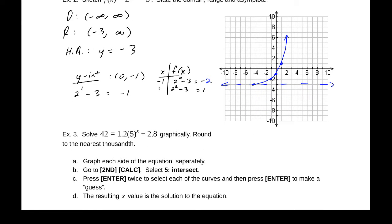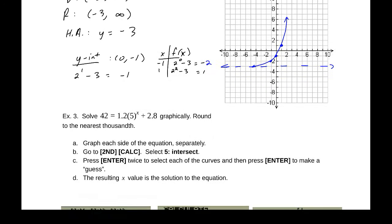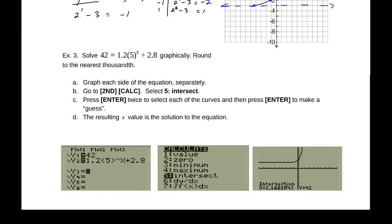Example three, solve this equation graphically and round to the nearest thousandth. So what we'll do for this, 42 = 1.2(5^x) + 2.8. We will graph each side of this equation separately. This will be my y-one in my function, and this will be y-two. Once they're graphed, I will go to second calc, select five for intersection, press enter twice to select the two functions we have on there. Now, if you notice, they're actually not both graphed on here. Y = 42 is somewhere up here, so I can't see it, however it will still find the intersection. So I can press enter twice, and then once again to make a guess, and the resulting x value will be my solution.